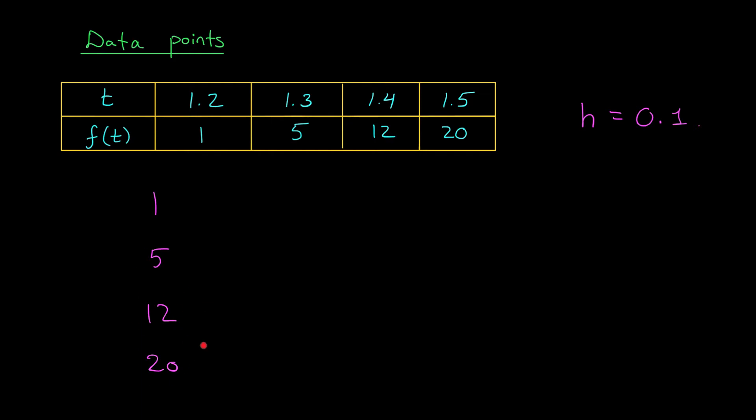So for example, 20 minus 12 gives me 8, 12 minus 5 gives me 7, 5 minus 1 gives me 4, and now I do it again. 8 minus 7 gives me 1, 7 minus 4 gives me 3, and finally 1 minus 3 gives me minus 2.